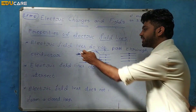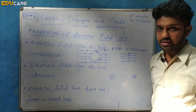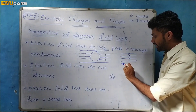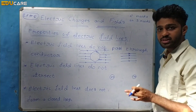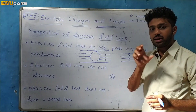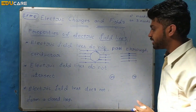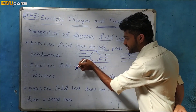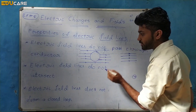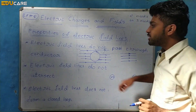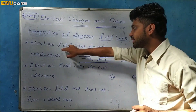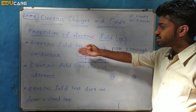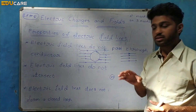Now the next property is: electric field lines do not pass through a conductor. When we represent the electric field with field lines and place a conductor within it, no electric field lines pass through the conductor. This is a key property of electric field lines — they do not pass through a conductor.